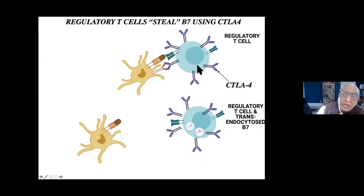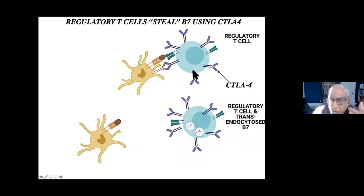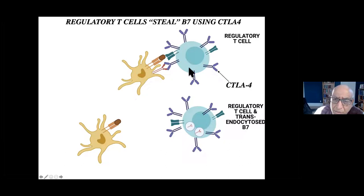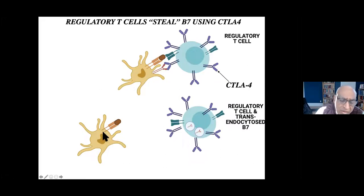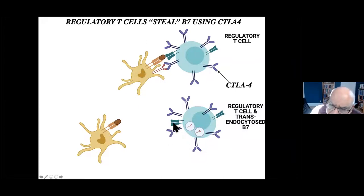Regulatory T cells have a lot of CTLA-4 on the surface. CTLA-4 has a specific function: when a dendritic cell is primed to activate a naive T cell, the Treg's CTLA-4, because of its high affinity, can bind to B7, grab it, take it off the membrane, and ingest it. This process is called transendocytosis. As a result, the dendritic cell that was primed to activate naive T cells is no longer capable of doing so - even if it still has the antigenic peptide, it has lost its B7, which has been stripped from its surface by CTLA-4.